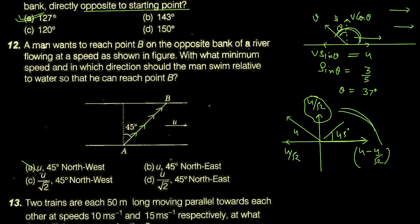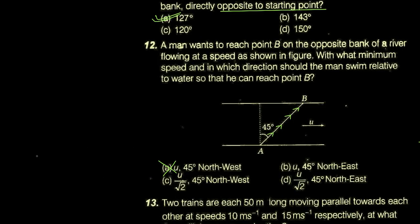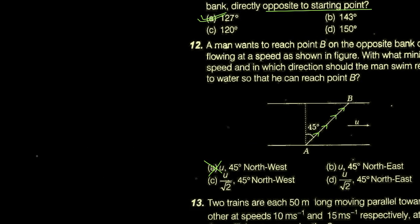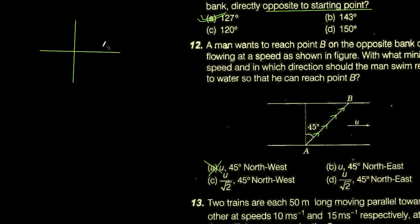دوسرا option دیکھتے ہیں: u velocity 45 degree north east۔ جب یہ 45 degree north east پہ خودی ہو گئی اور river بھی u اس طرف لے کے جائے گی تو angle بہت کم ہو جائے گا، کافی کم۔ تو یہ answer نہیں بنے گا — یہ بھی غلط ہو گیا۔